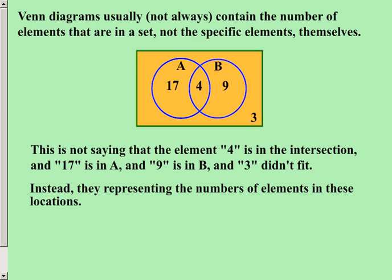The information that is being communicated there is this. Those values represent the numbers of elements that exist in those locations. So the 4 in the intersection in there, that's not the number 4. That is indicating that there are 4 values that are inside of that intersection. The 3 sitting out in the universe, that's not indicating a number 3. That's saying there are 3 values that did not fit into set A or set B.